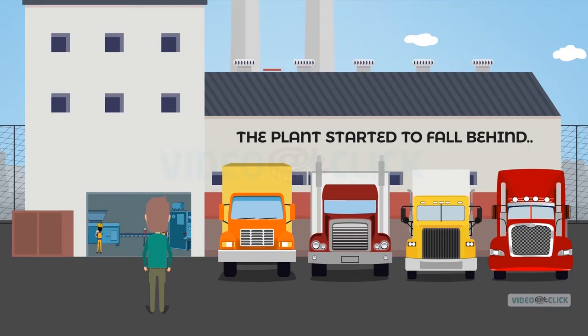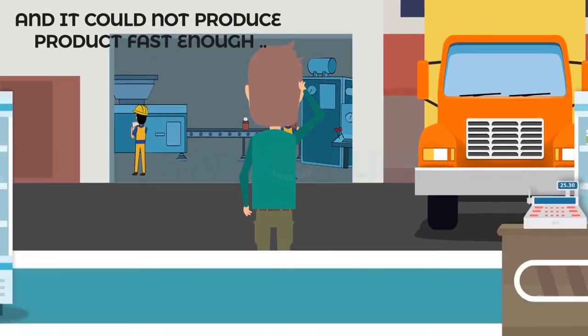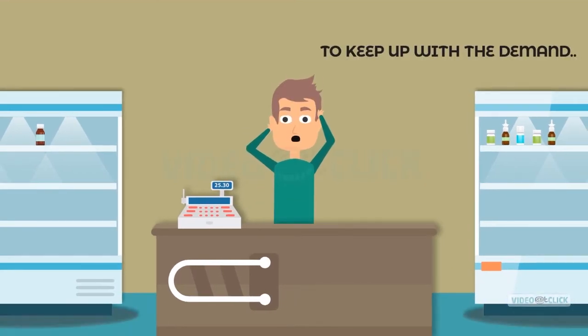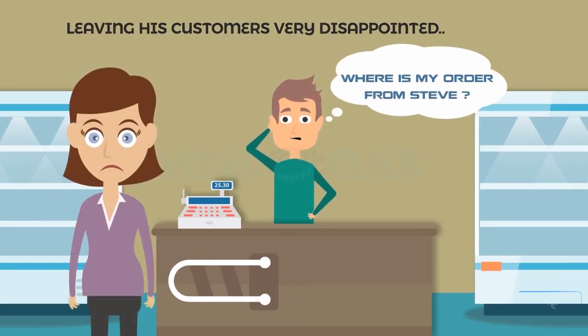No one trusted the data, so everyone began guessing, and the plant began to fall behind. It couldn't produce the products fast enough to keep up with demand, leaving his customers very disappointed.